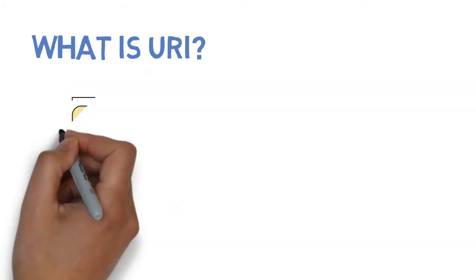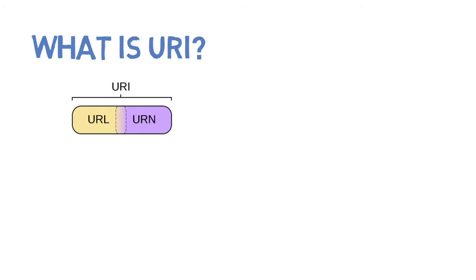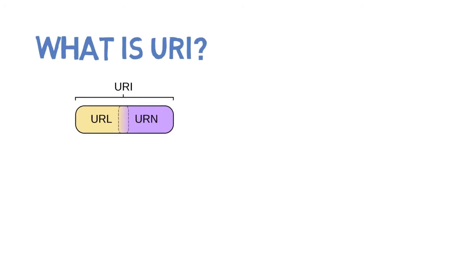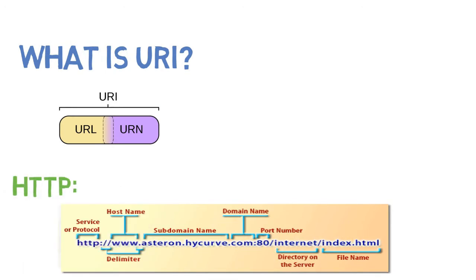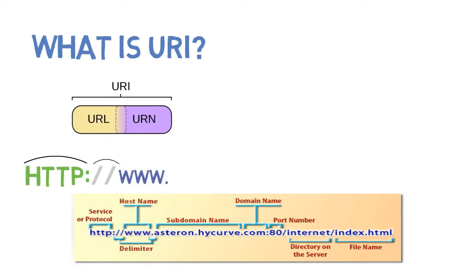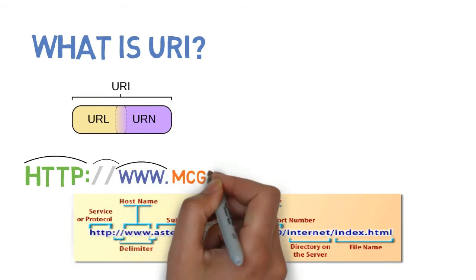In order to make sure Linked Data is working, there are a couple of standards and rules you need to follow. URI is an identifier, which is broken down into URL and URN. URL has different modules or components: HTTP, which is Protocol or Service, then we have Delimiters, then we have the hostname.